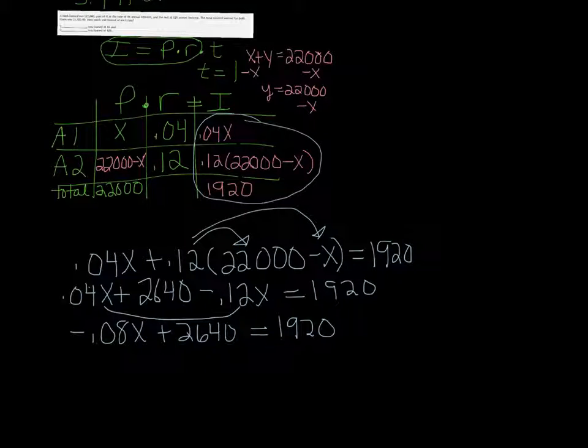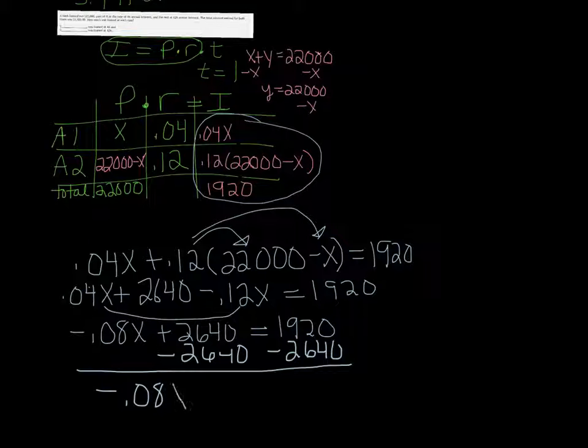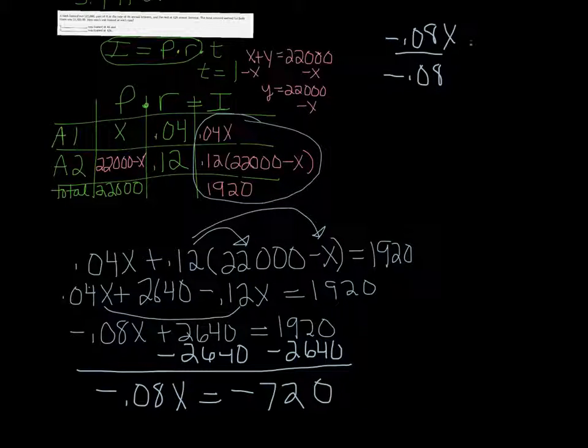We're going to subtract 2640 on both sides. We get negative .08X equals 1920 minus 2640. And then of course the final step is to divide both sides by negative .08. And when you do that, you get 9,000. So X equals 9,000.